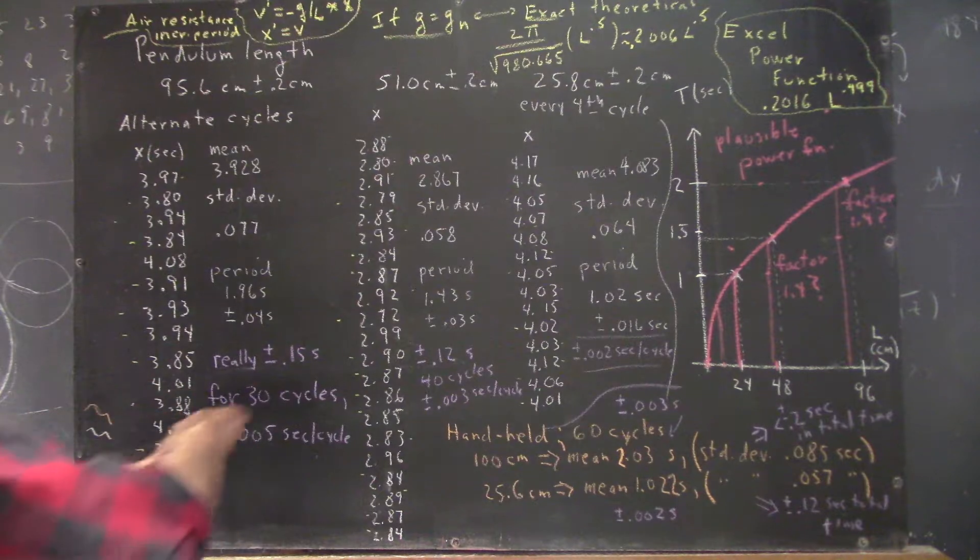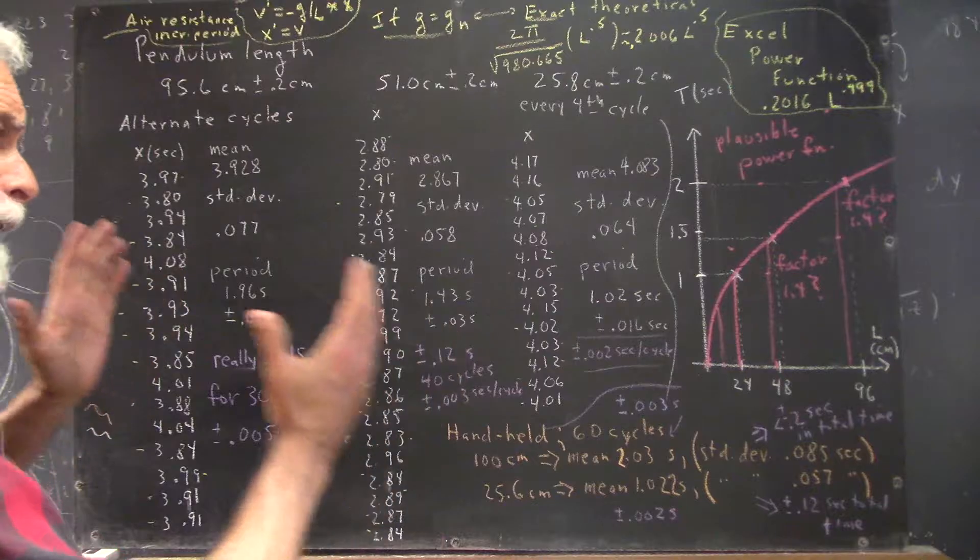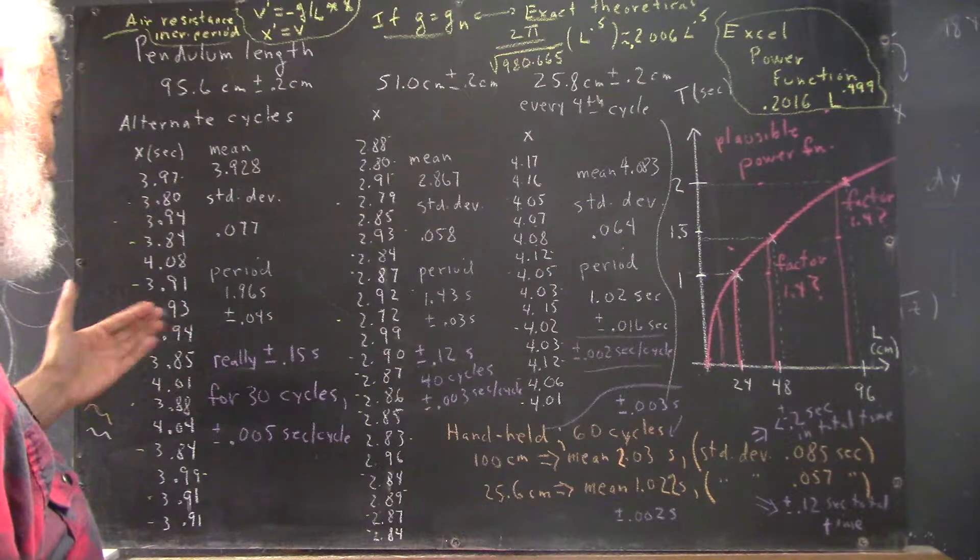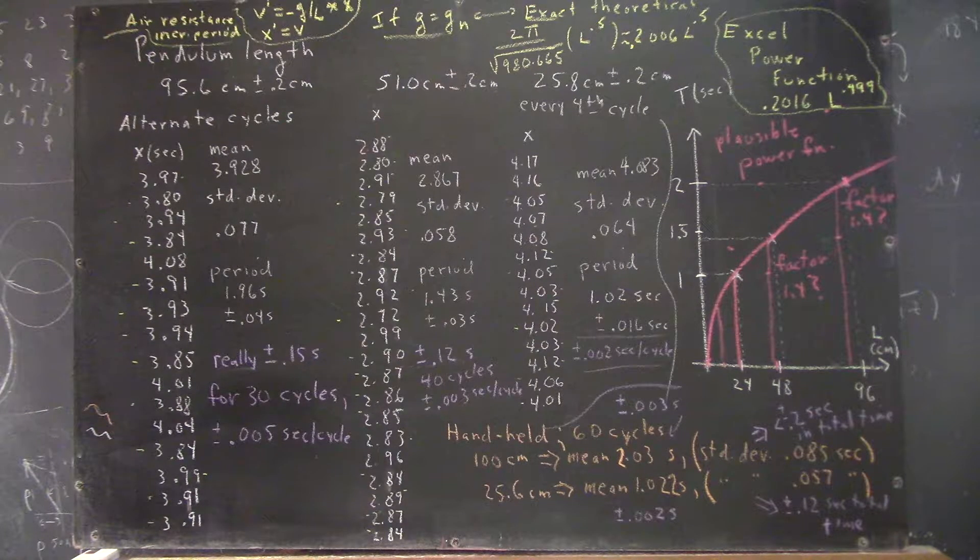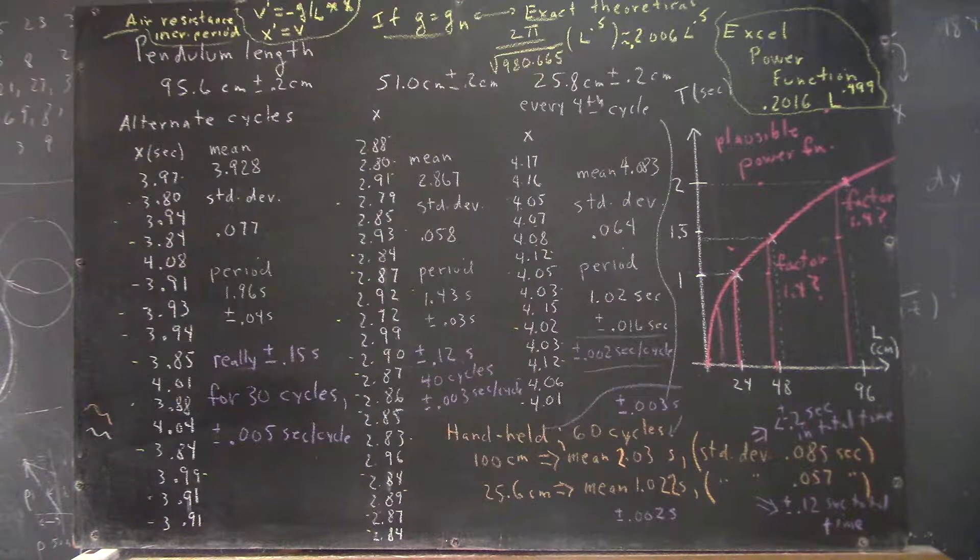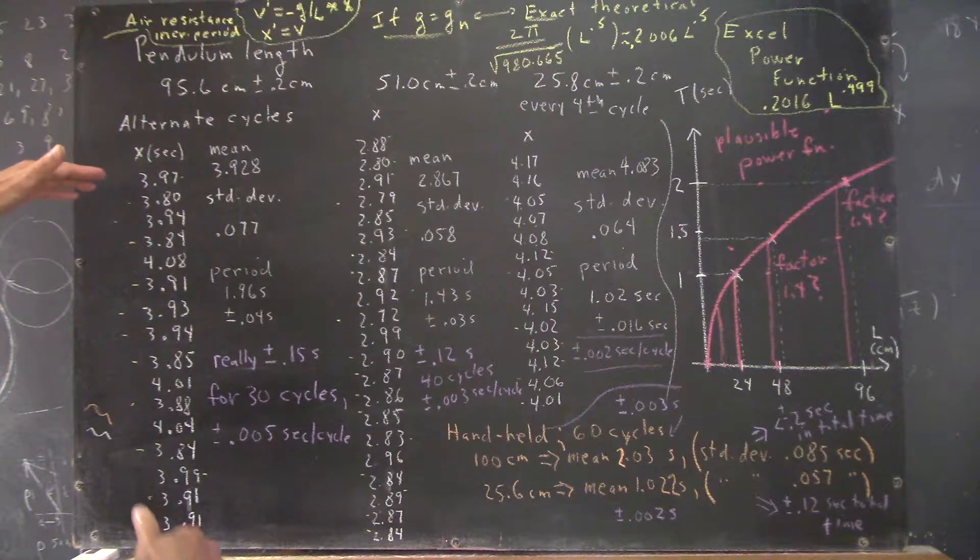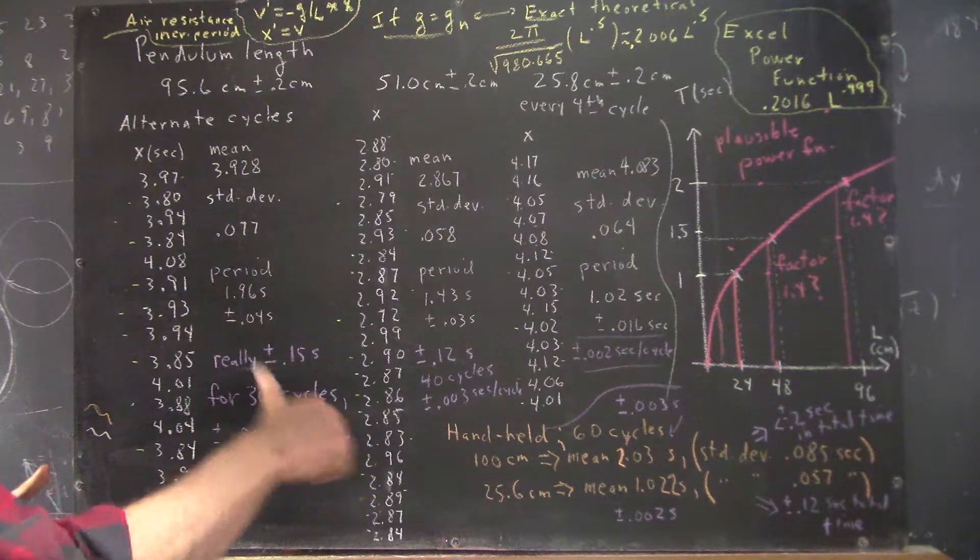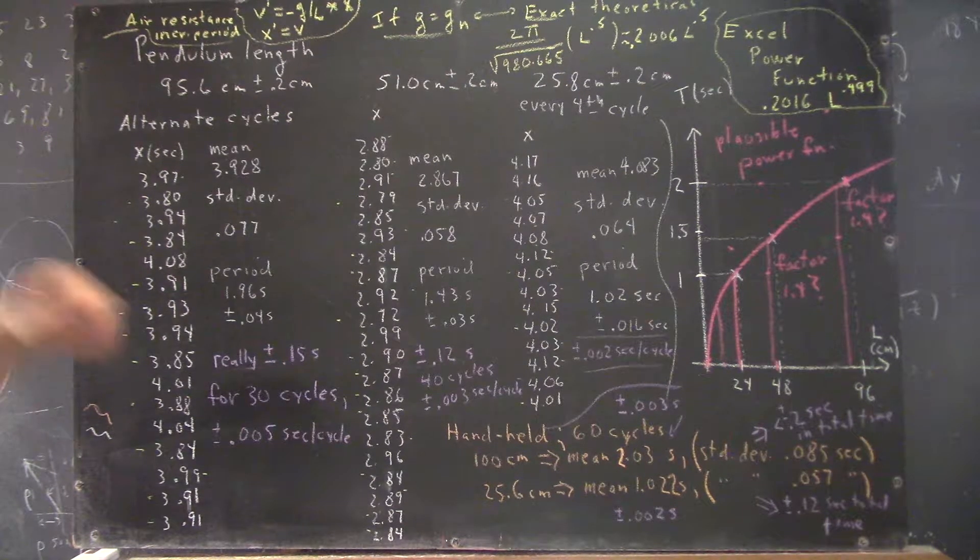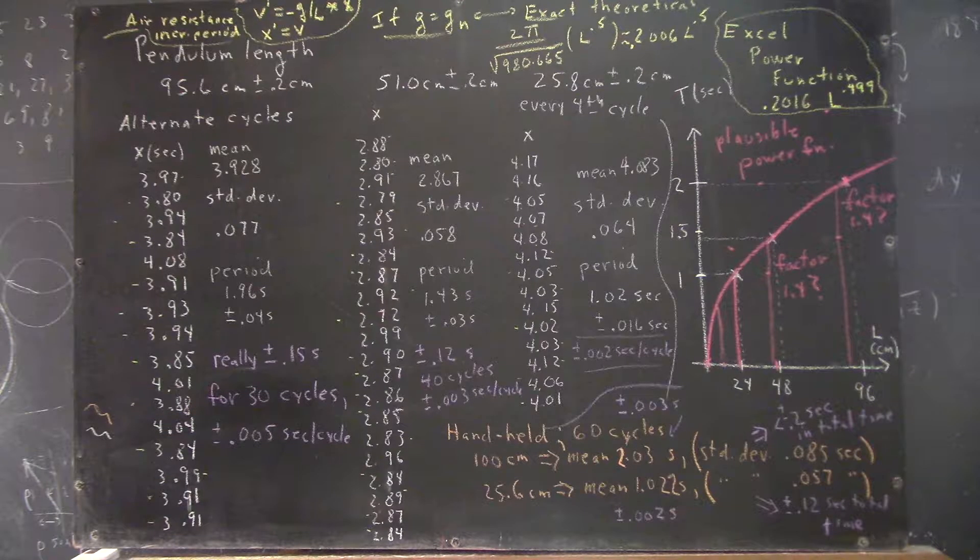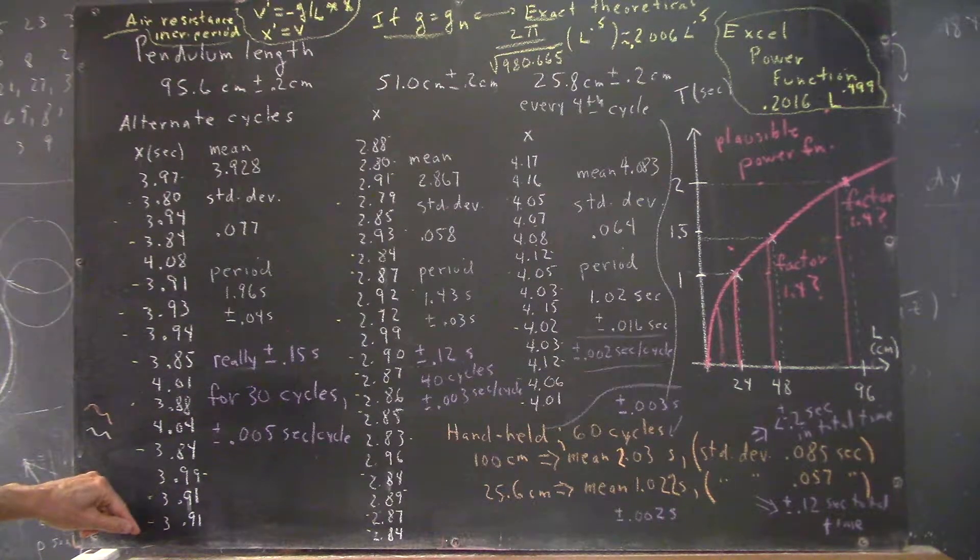Because remember how a normal curve works, within two standard deviations, you've got 96% of the curve. So, we're kind of like 90% certain if, indeed, these measurements are normal, if our timings follow a normal distribution around a mean, we're really pretty safe saying that we're probably within 0.15 seconds of the right time for the entire minute, or for the entire 30 cycles.